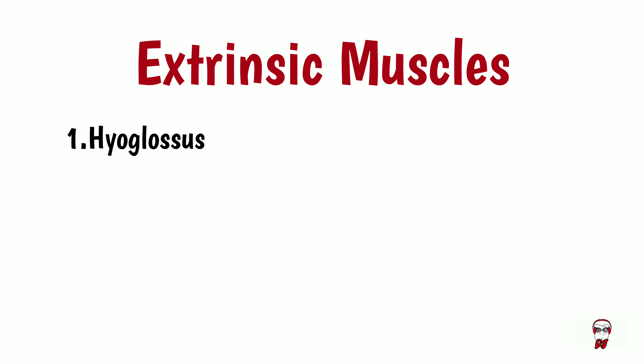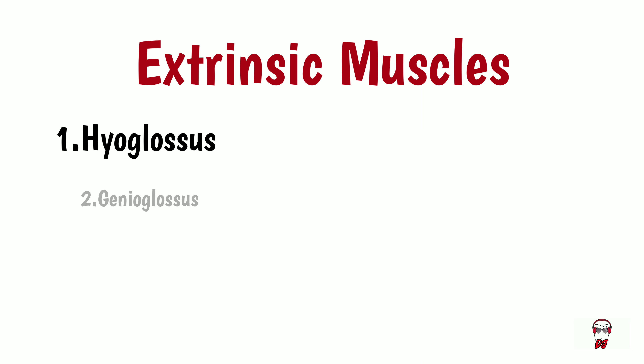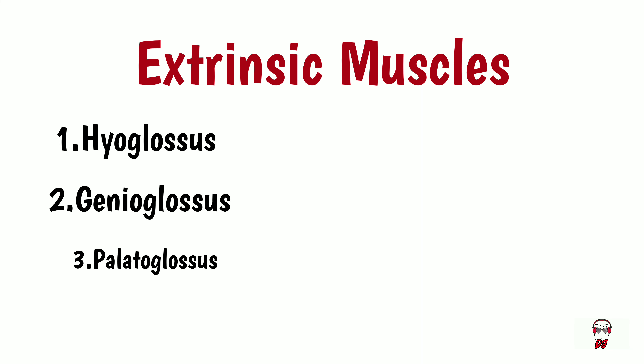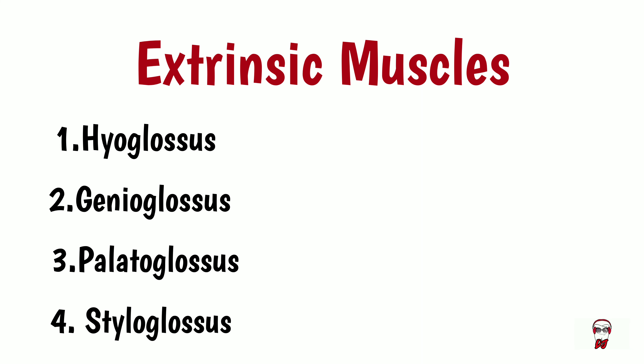The extrinsic muscles include the hyoglossus, the genioglossus, the palatoglossus, and the styloglossus.